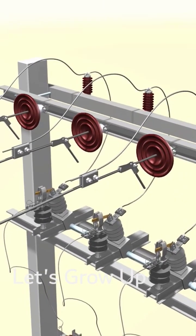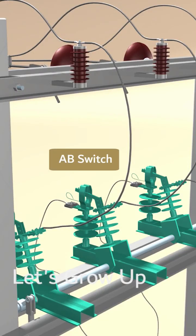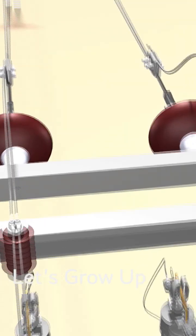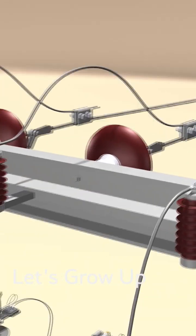At first, the 11 kV wires are linked to the A-B switch, and a separate connection is established with the lightning arrestor.